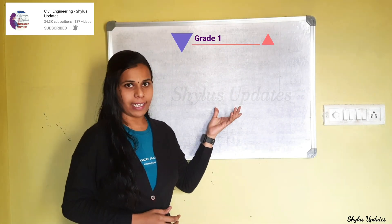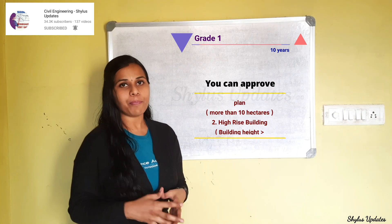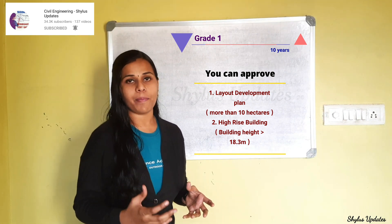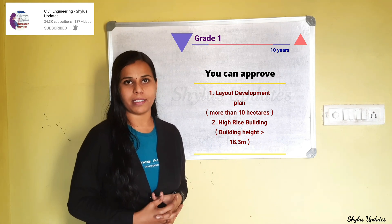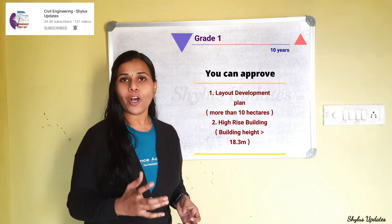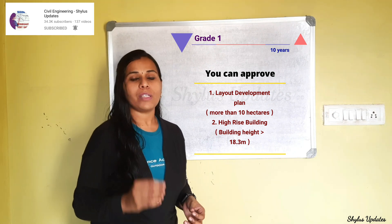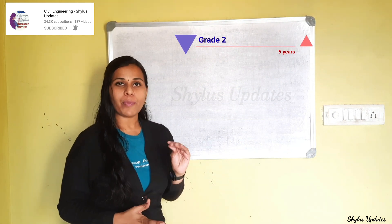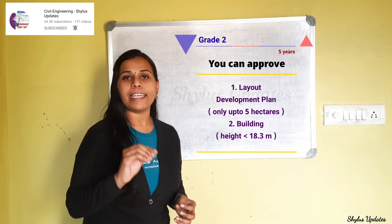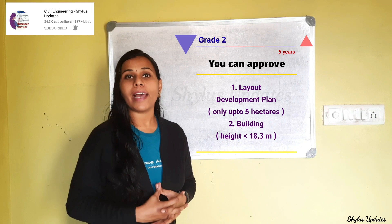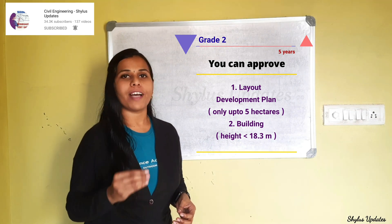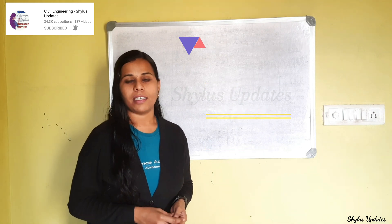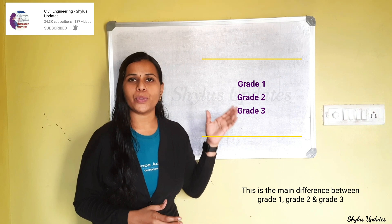If you are in Grade 1 — that is, with 10 years of experience — you can approve any layout development plan or high-rise buildings. A high-rise building is defined as a building with a height greater than 18.3 meters. You can also approve layout development plans where the land area is more than 10 hectares. Grade 2, with 5 years of experience, allows approval of buildings less than 18.3 meters in height and layout development plans up to 5 hectares. Grade 3 allows approval of only small development projects.